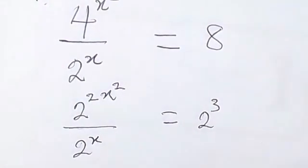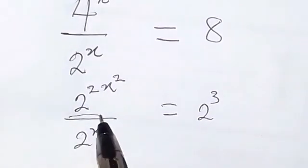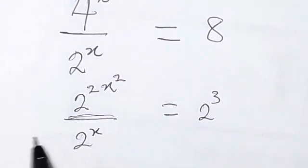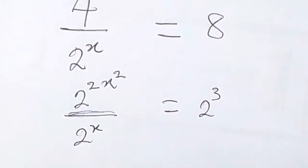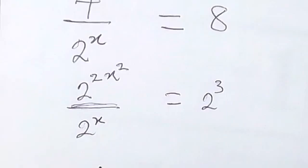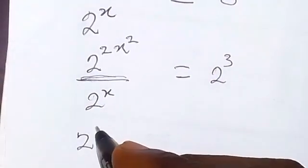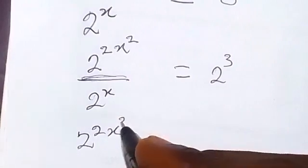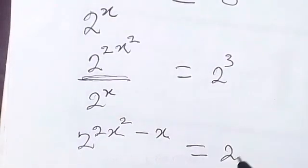From here now we can apply the law of indices. When same base divide each other, then we subtract the index. This can be written as 2 raised to power 2x² minus x equals to 2 raised to power 3.